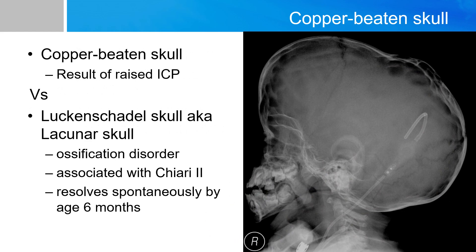A copper beaten skull appearance is not a cranial synostosis by itself, but rather the result of it. When you have a severe cranial synostosis, such as a pansynostosis, the cranial space is reduced, and the brain volume exceeds the cranium size, resulting in raised intracranial pressure. Consequently, the growing brain exerts continuous pulsatile pressure on the malleable cranium, producing a gyral pattern evidenced on a plain skull x-ray — most commonly known as the copper beaten skull appearance. This is the least common manifestation of cranial synostosis in a developing skull.